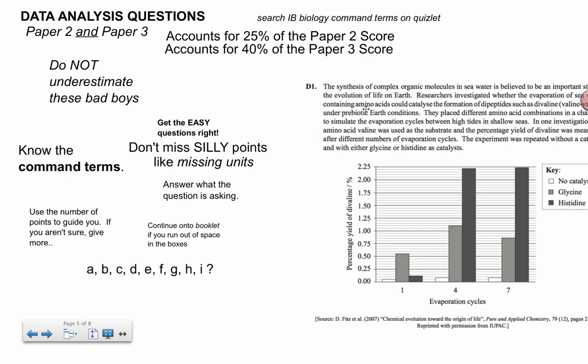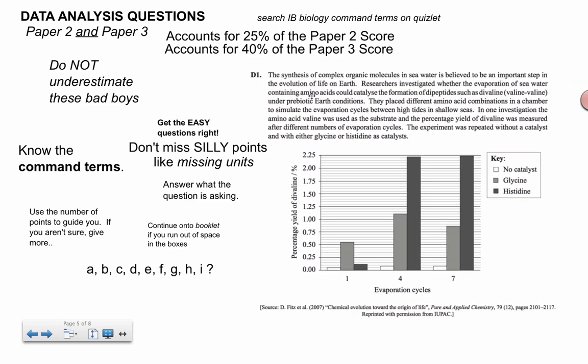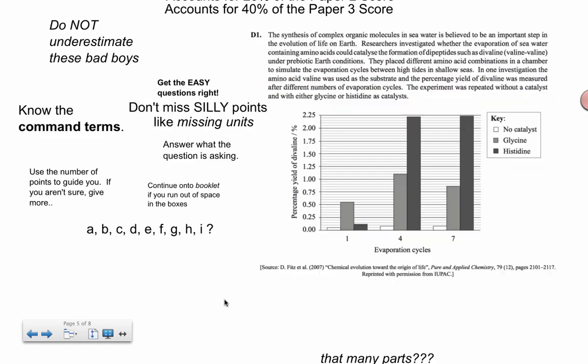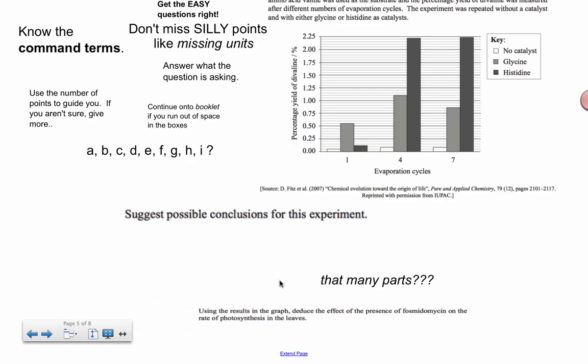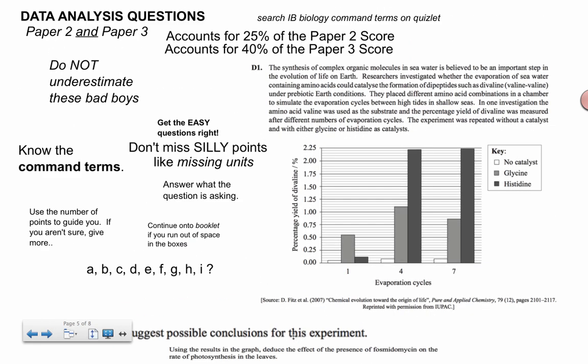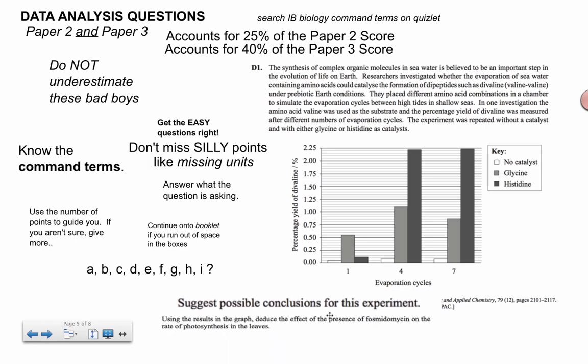For higher level, this is actually option three, but Paper 2 always starts with a data analysis question. And it often has this many parts. It has a part A, B, C, D, E, F, G, H, I. That's crazy. And that's all question one. And they get a little bit more complex as you get up here. And they start to ask things like suggest possible conclusions for the experiment, or using the results in the graph, deduce the effect. And they use all this big language. But really what they're trying to do is trying to get you to think like a scientist in real life. By the time you reach letters G, H, and I, you'll have come across probably three different graphs. And they'll ask you to look at all the results from the three different experiments and synthesize the findings and evaluate the hypothesis or come up with the conclusion.